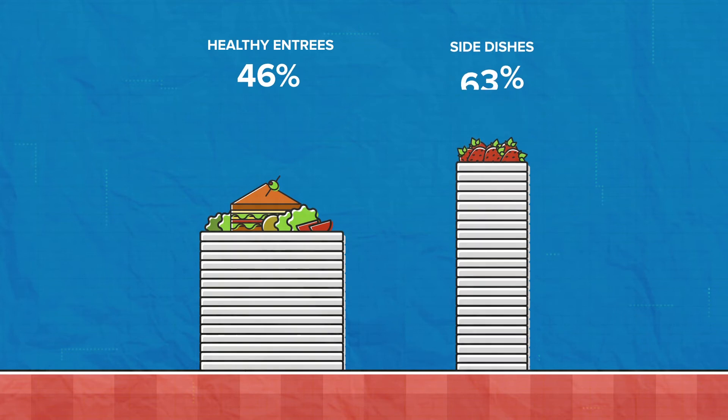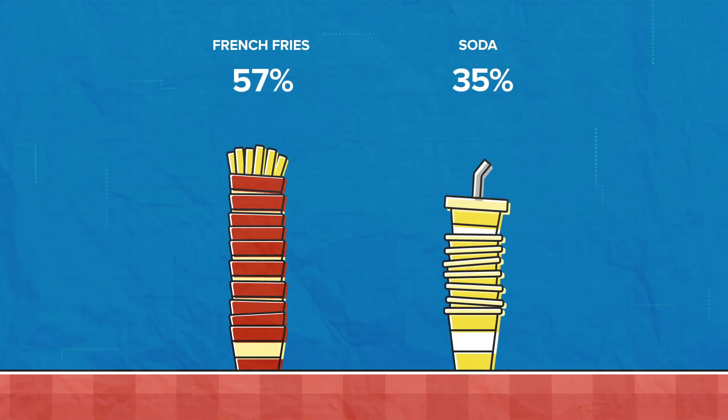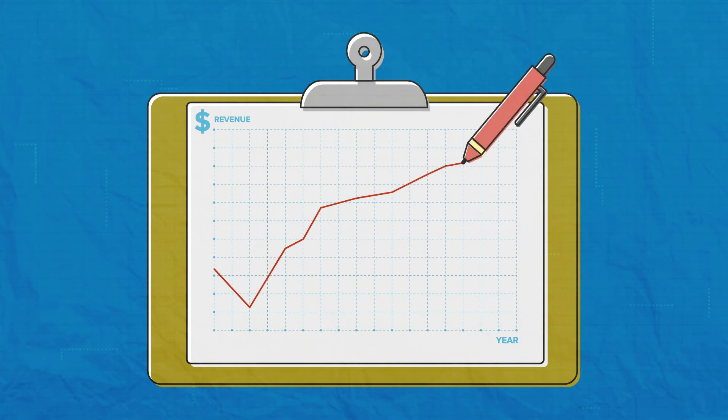Orders of healthy entrees and sides went up, while orders of fries and soda went down. And the restaurant's revenue continued to grow.